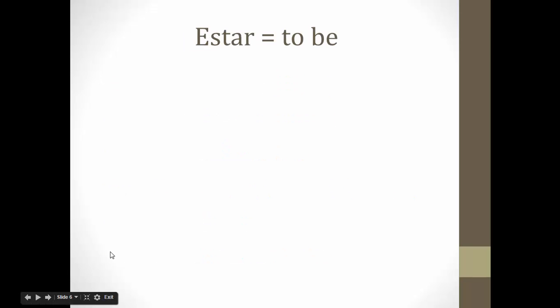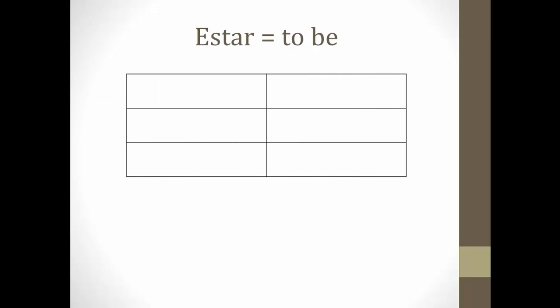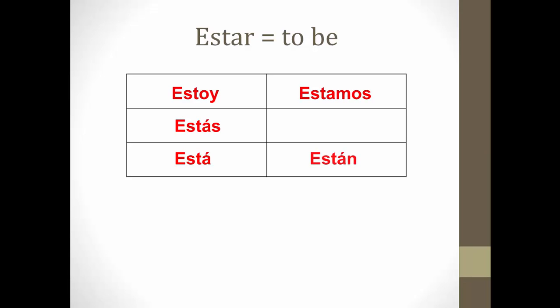Now we're going to talk about the verb estar. Estar also means to be, and we use it for temporary things in life. Please fill out the box in the top left-hand corner of your note guide that says estar. If you wanted to say I am, you would say estoy. You are — estás. He or she is — está. We are — estamos. And they are — están, with an accent over the a.